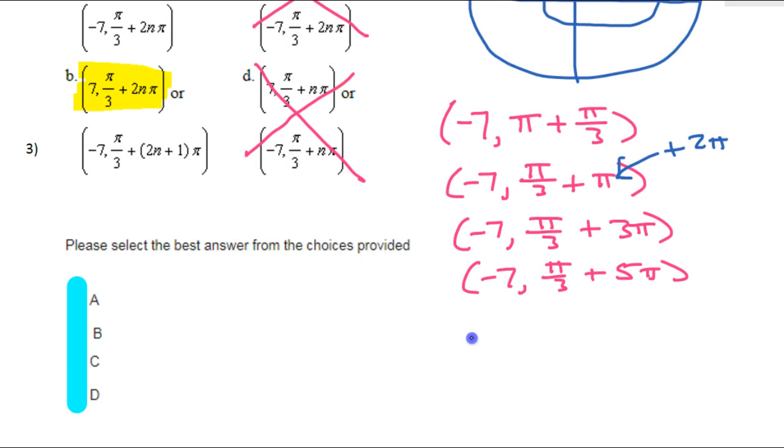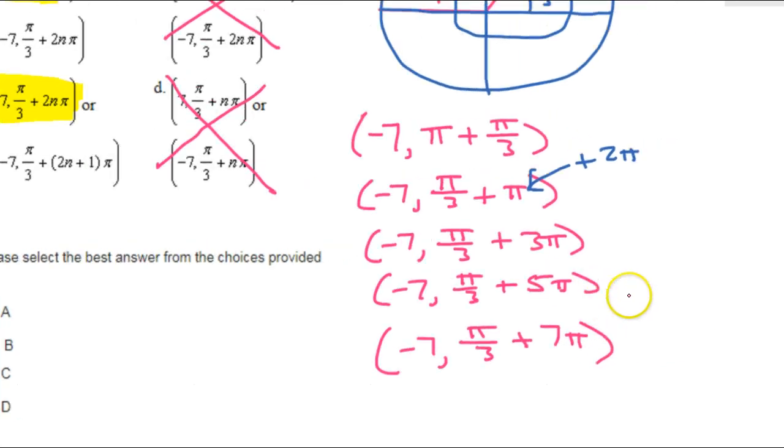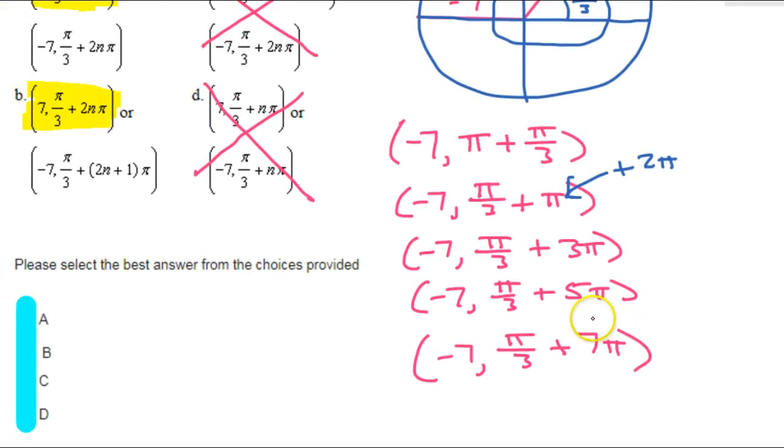Or, if I went around again, it'd be negative 7, and then pi over 3 plus 7 pi, and so on. So, how do I generalize this? I've got these odd numbers. Even the first one, when I just had pi over 3 plus pi, you can think of that as 1 pi.